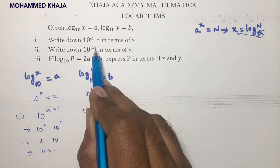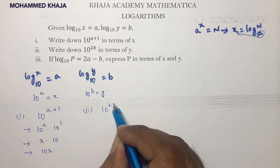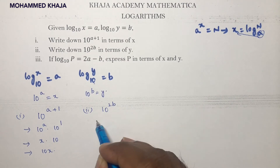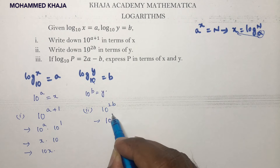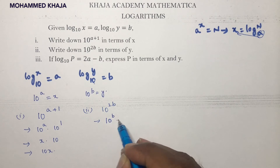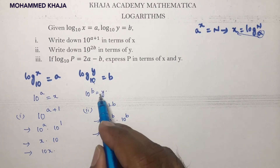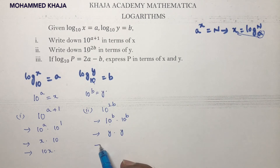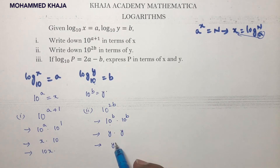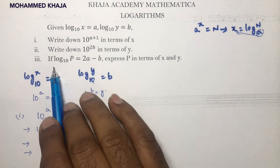Second question: write 10^(2b) in terms of y. We split 10^(2b) as 10^b × 10^b. Since 10^b = y, the answer is y².